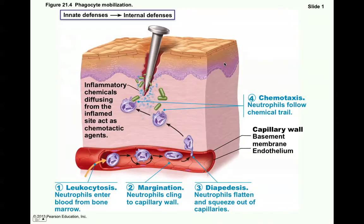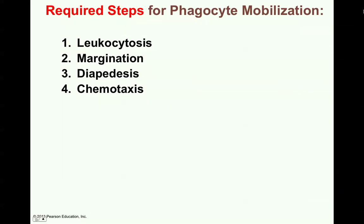The different steps in phagocyte mobilization are leukocytosis, margination, diapedesis, and chemotaxis. The white blood cells increase in number and go to the region of infection. Margination means they go along the side of the capillary vessel wall. Diapedesis — they actually squeeze through the capillary walls. And chemotaxis describes how chemicals released locally attract the white blood cells to come fight the infection.